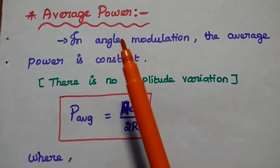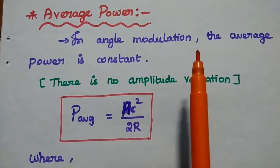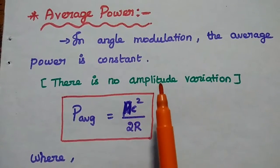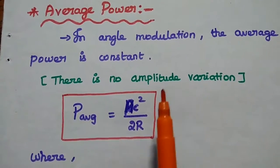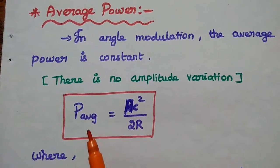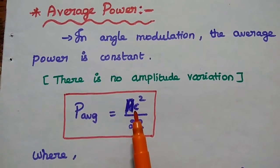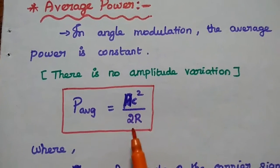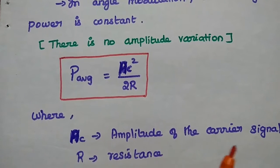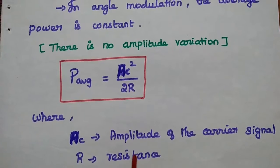Now, regarding the average power of the angle modulated wave: in angle modulation, the average power is constant since there is no amplitude variation. The average power equals the carrier power, which is AC² divided by 2R, where AC is the amplitude of the carrier signal and R is the load resistance or antenna resistance.